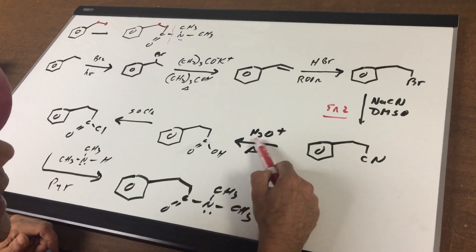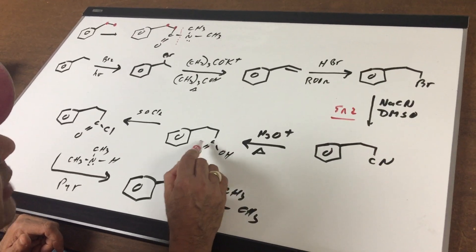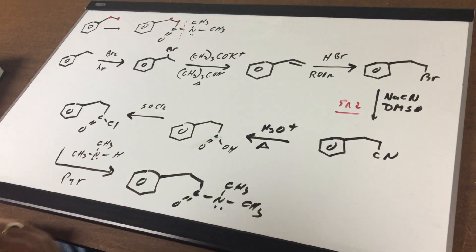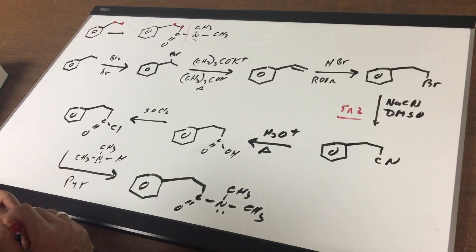Then, acid hydrolysis in heat converts the cyanide group into a COOH group. Then, I treat it with thionyl chloride that replaces the OH group with a Cl.